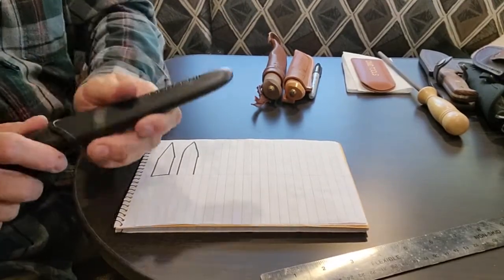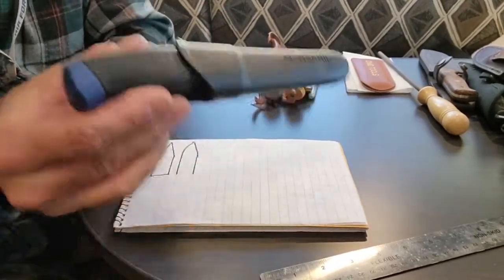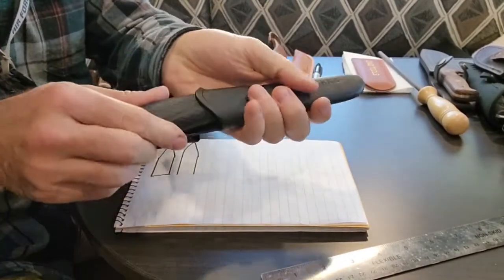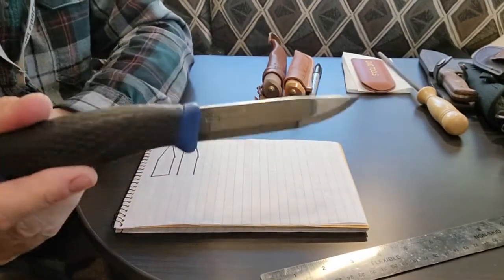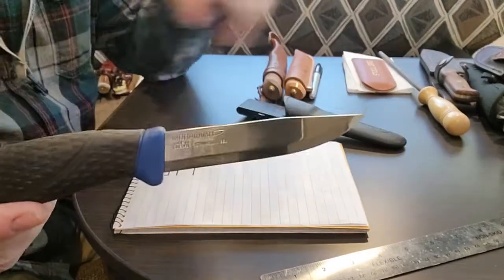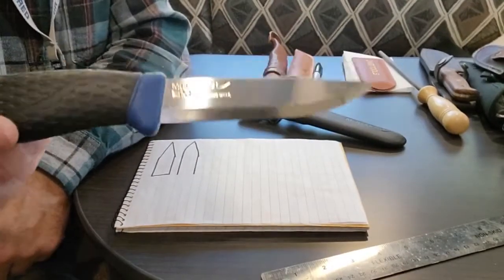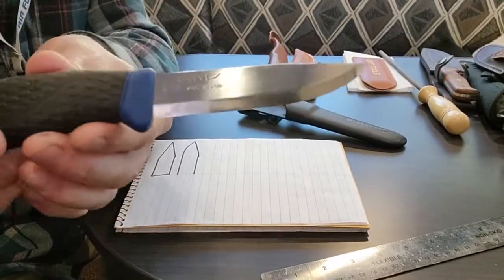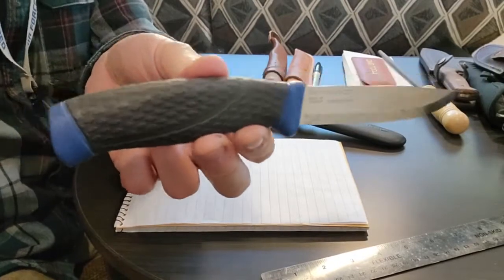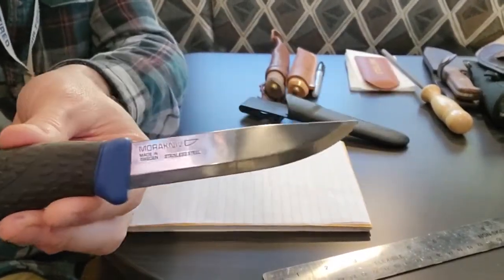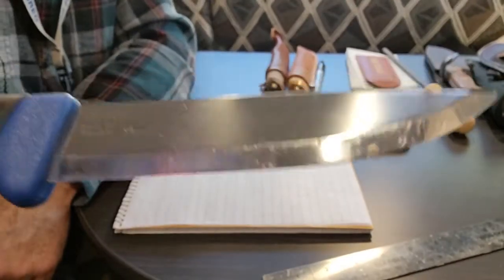If you're having trouble making good feathers, go out and buy one of these. Just spend the 20 bucks or whatever. They used to be able to get these Mora Companions for like 10-12 bucks. Now there's a lot of inflation going on, but just get a Mora Companion.